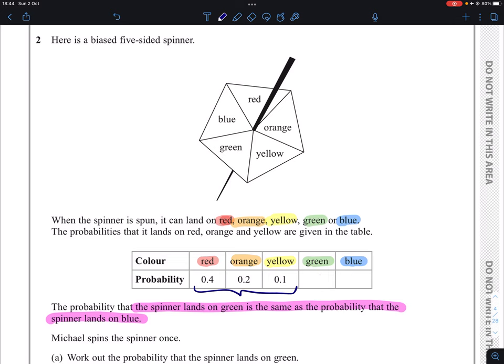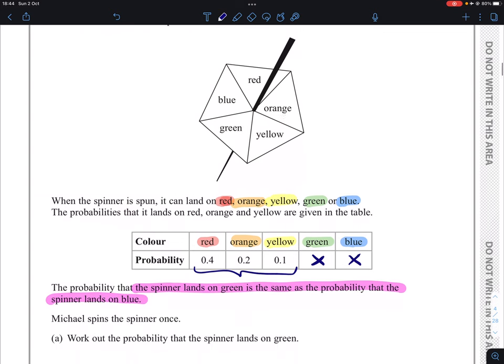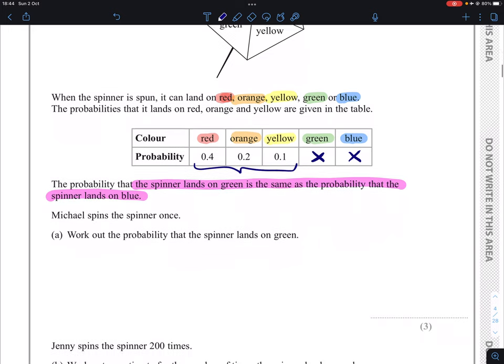Because there are unknowns we're trying to find, we're going to give them a letter. Let's give them the letter X. In order to figure out what that probability is, we take the fact that we know all probabilities must add up to one.